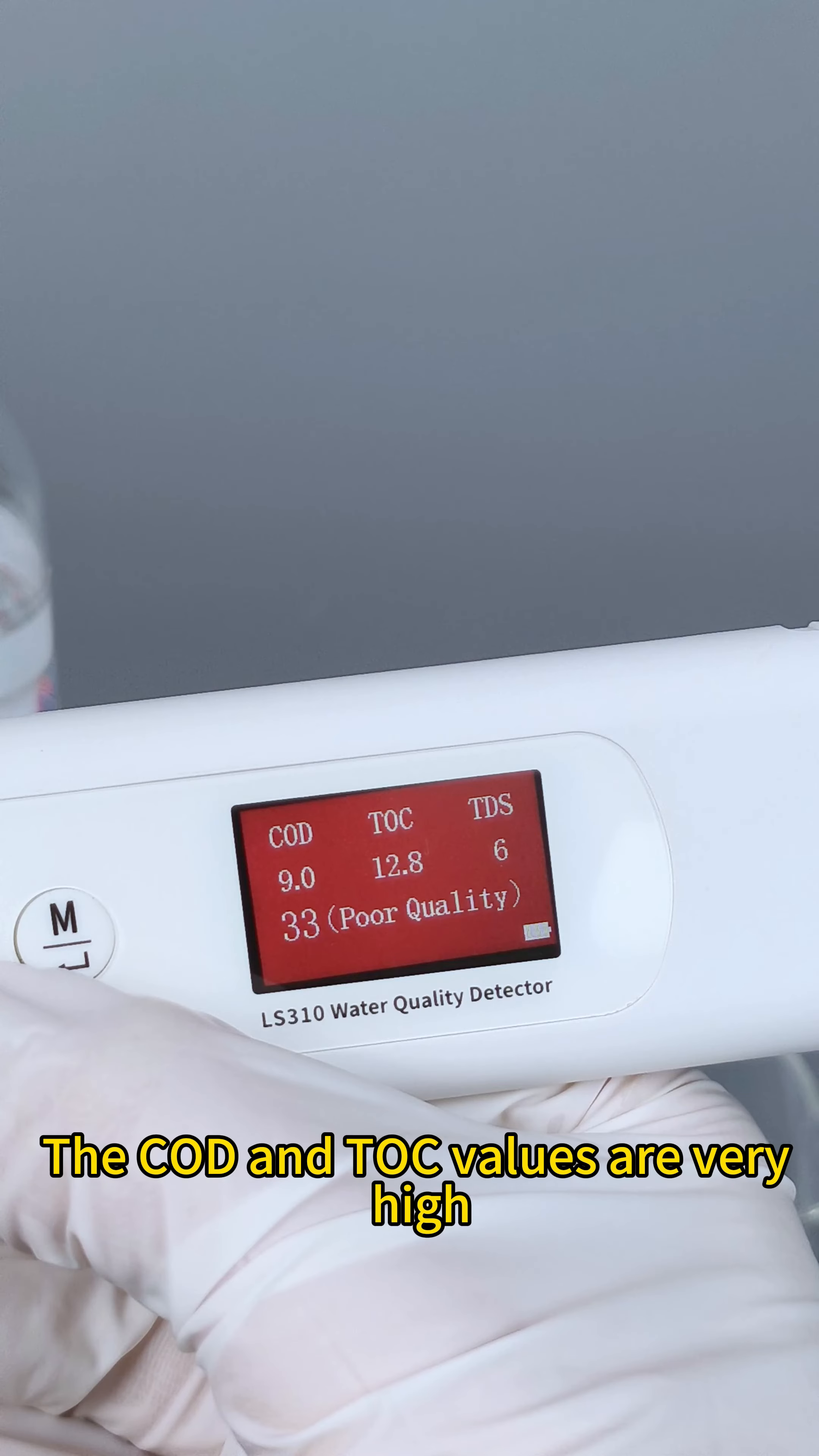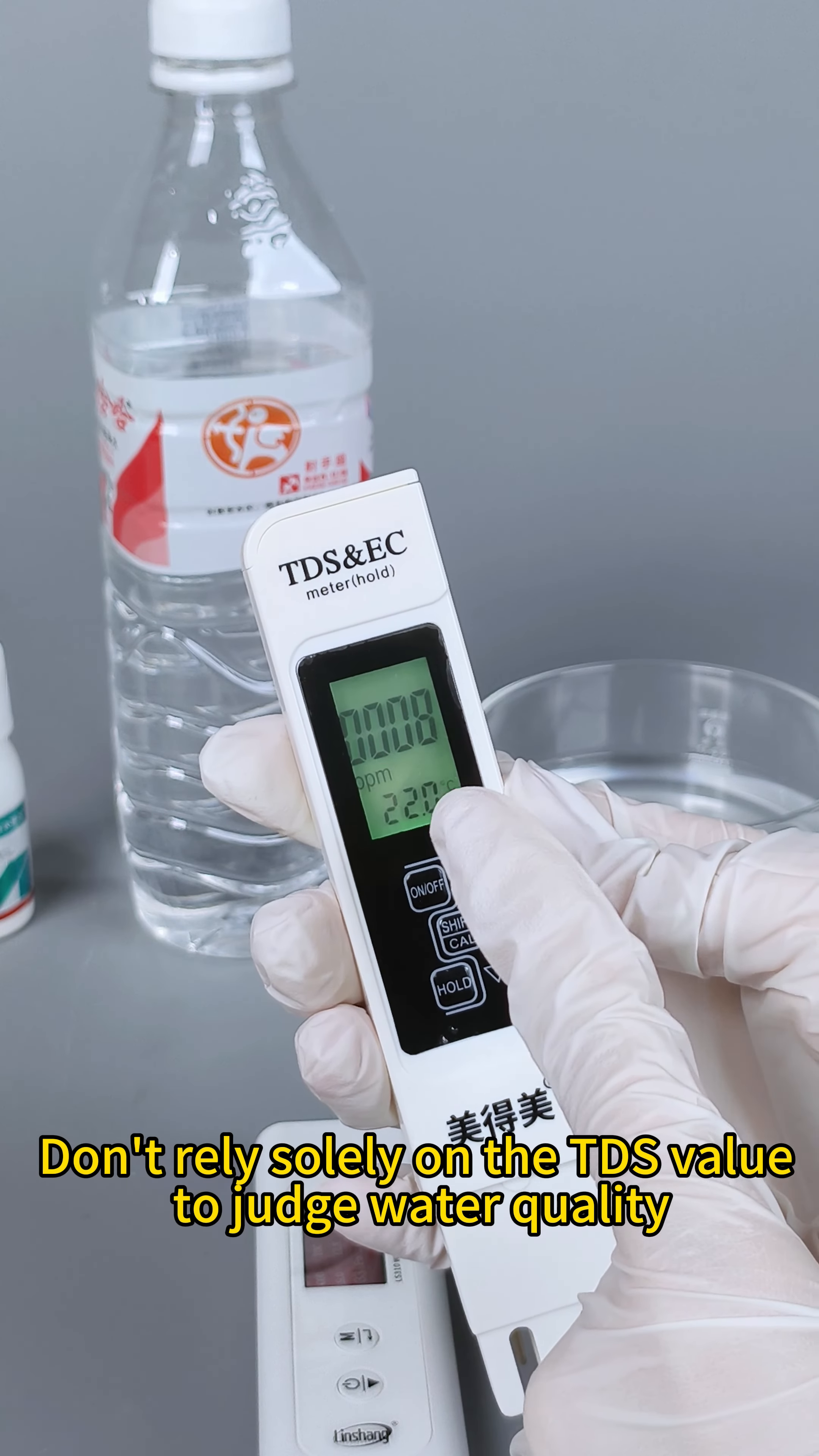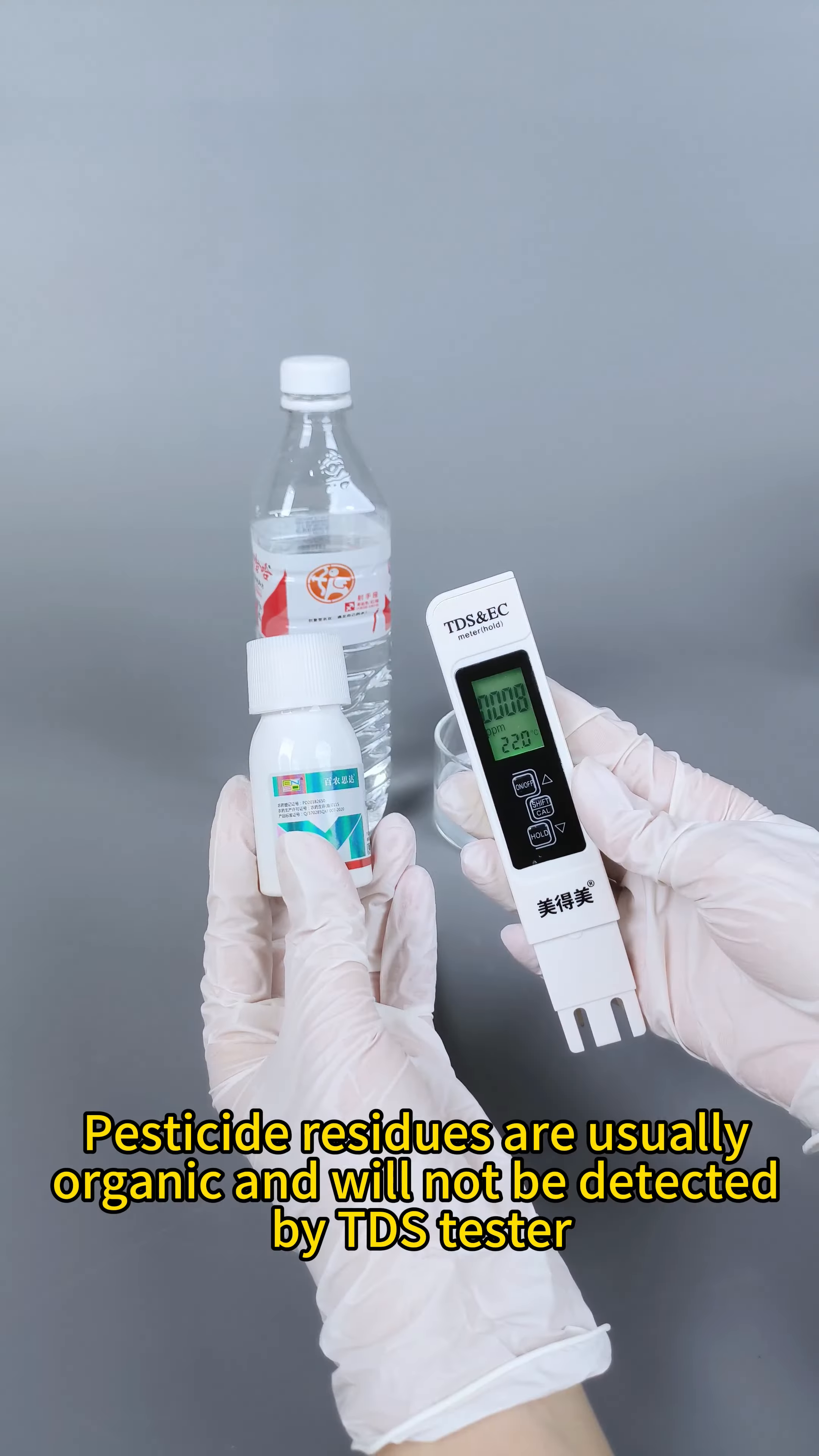Can pesticide residues in water be detected? This is pure water. First test it with the TDS tester and Leancheon water quality tester. It shows that the water quality is fine. Add some pesticide and mix it thoroughly.